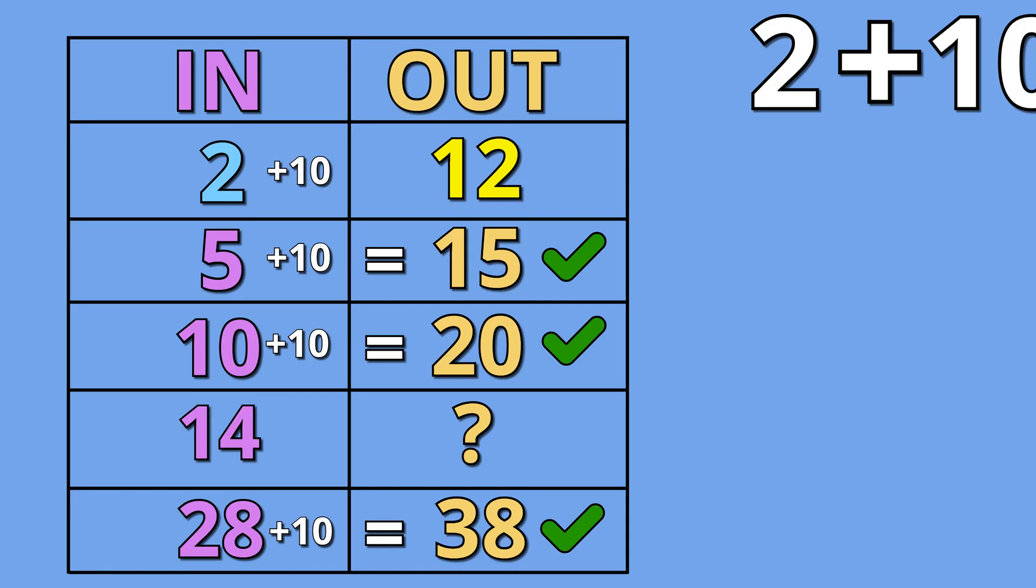Since our rule works for all sets of numbers, I can now apply the rule or the pattern we found to the number 14 to find our missing value. 14 plus 10 is equal to 24. The number 24 is our missing value.